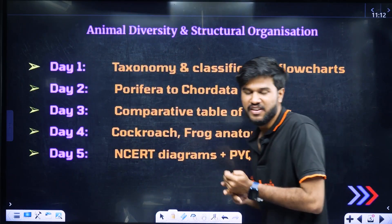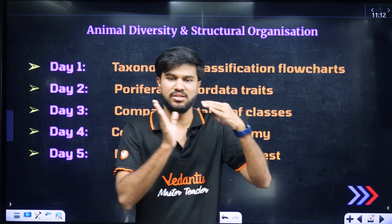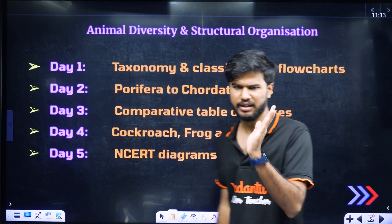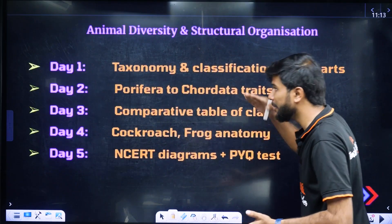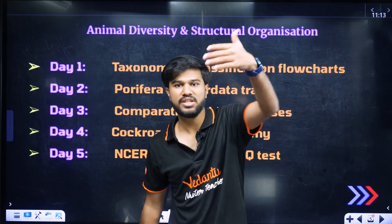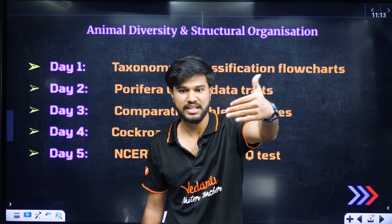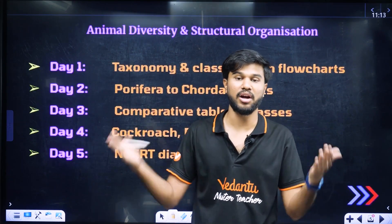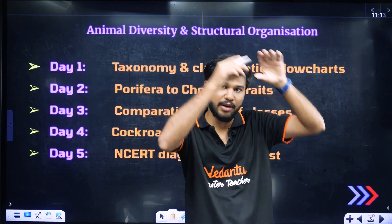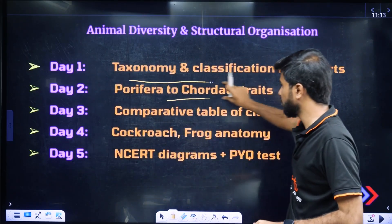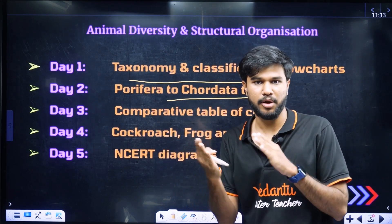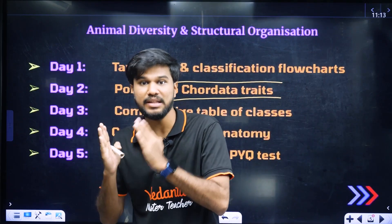In phase 1, we will talk about animal diversity and the living world. On day 1, you will have a classification. From day 2, we will talk about flow charts. If you study the flow chart, it gives a lot of useful information on animal kingdoms — you can compare it using tables and characters.